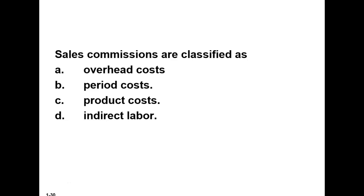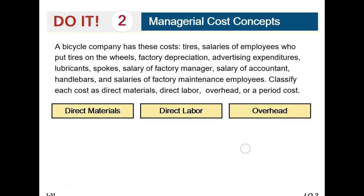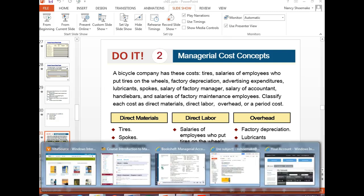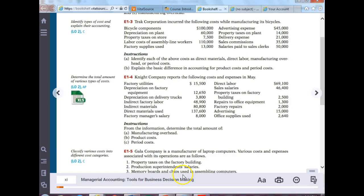Quiz: Sales commissions are classified as — period costs. Now let's look at Exercise 1-4 in the book.